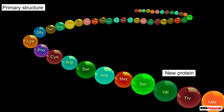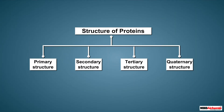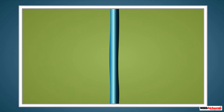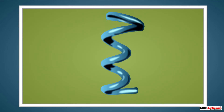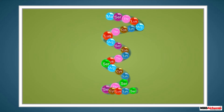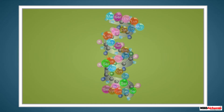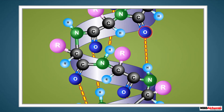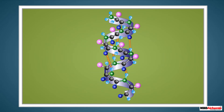The secondary structure of proteins refers to the manner or shape in which the polypeptide chains are arranged. The different arrangement of polypeptide chains exists due to hydrogen bonding between the oxygen of the carbonyl group of one amino acid and the hydrogen of the amide group of another amino acid.